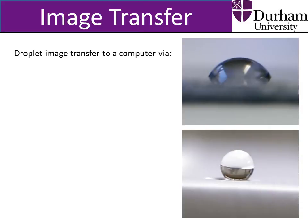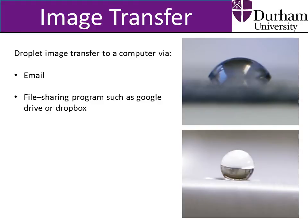These droplet images can then be transferred to a computer via email, a file sharing program such as Google Drive or Dropbox, or by USB connection directly to the computer. This last option is particularly useful if the images require in-the-field analysis where internet is unavailable. Once these droplet images are uploaded onto a computer which has ImageJ and the Drop Analysis plugin installed on it, they are ready for analysis.